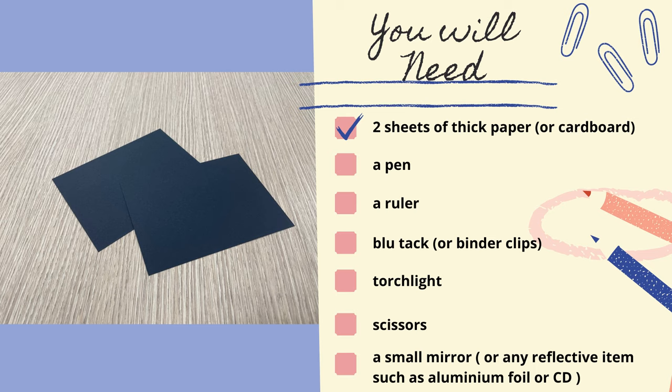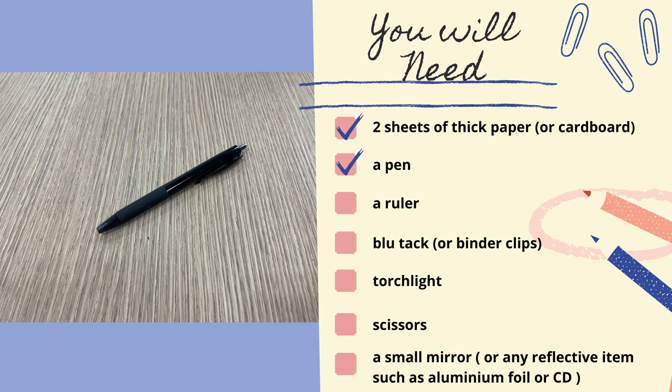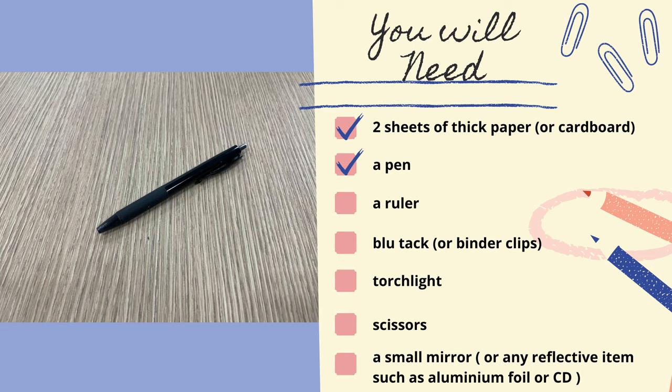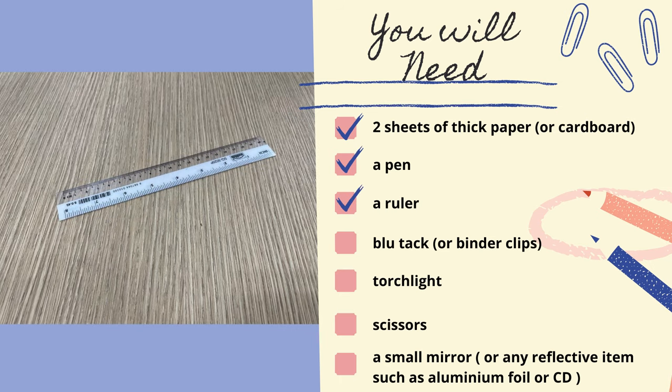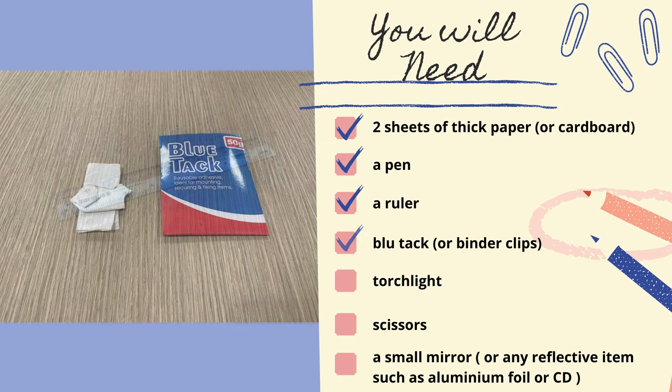Secondly, you'll need a pen. This is to make simple markings on our pieces of paper. Thirdly, a ruler. This will be helpful for us to make straight markings. Next, we will need some blue tack or binder clips. This will be used to hold our pieces of paper upright.